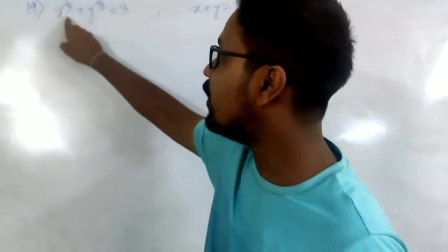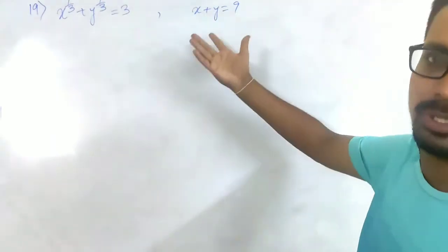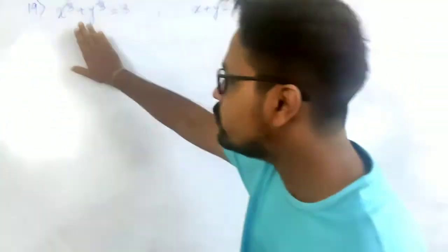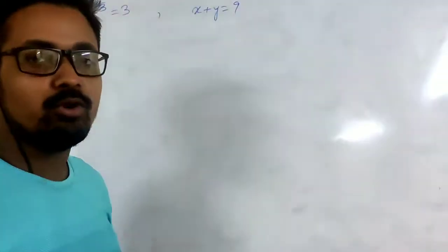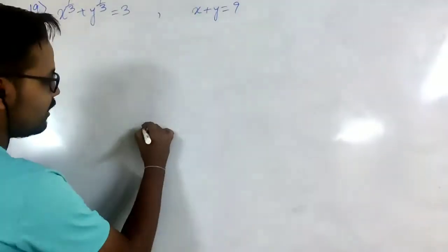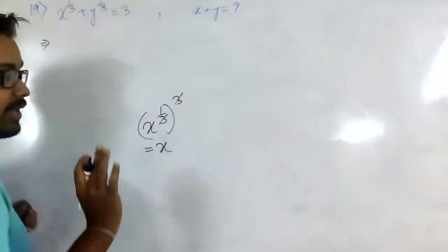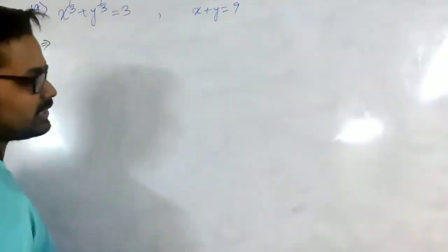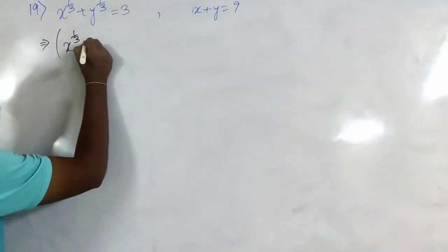In question 19, x has a power of 1/3 and y also has a power of 1/3. The second equation is a simple linear equation: x + y = 9, so let's keep it as it is. Our aim should be to remove the 1/3 power. In order to remove a power of 1/3 we need to cube both sides, because x to the power 1/3, when cubed, becomes x since 3 × (1/3) = 1.